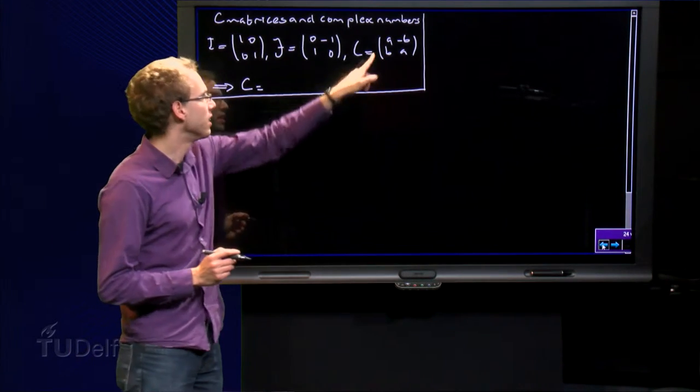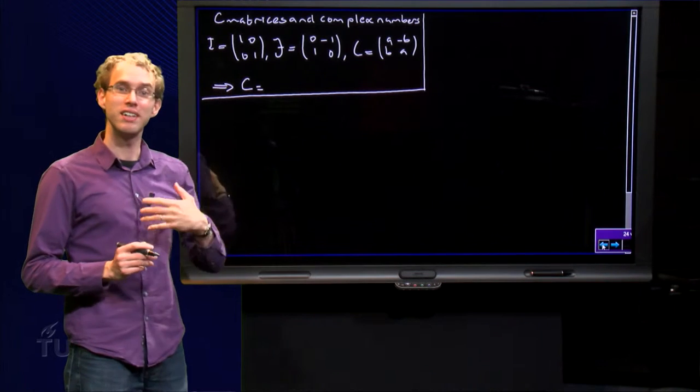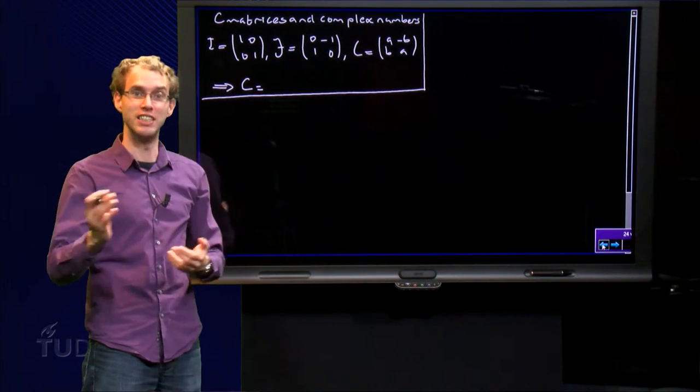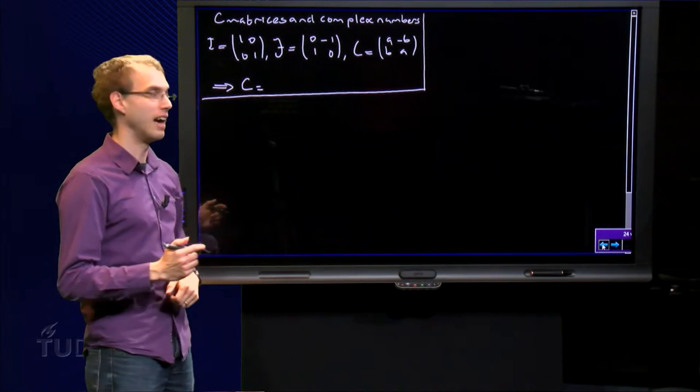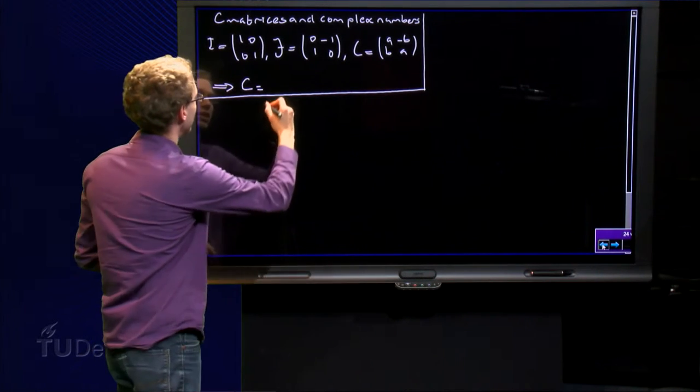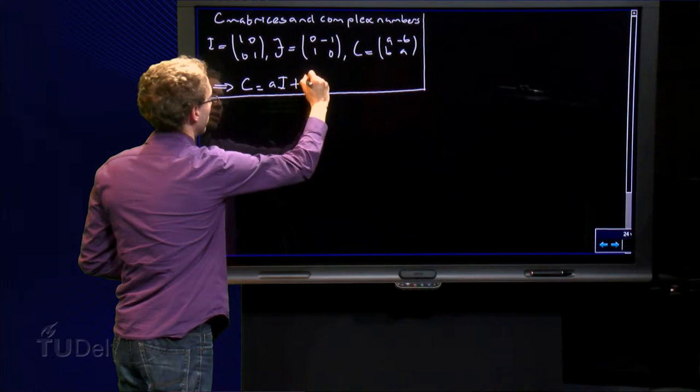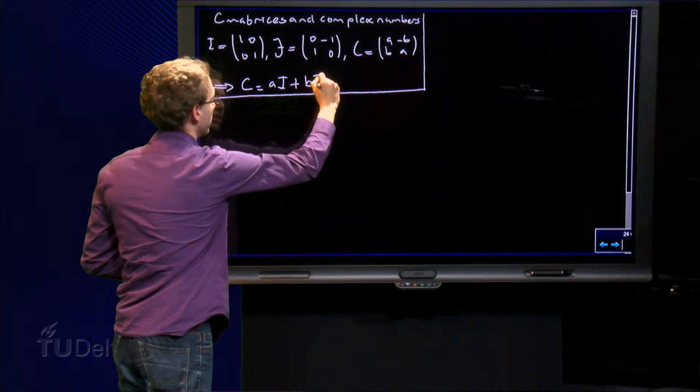If we now have a C matrix, A, A, B, minus B, then we can rewrite the C matrix as a linear combination of I and J, or in terms of I and J. C equals A times the matrix I plus B times the matrix J.